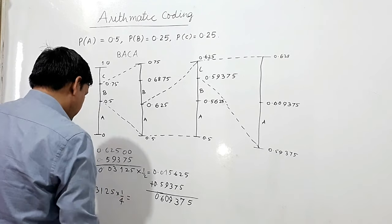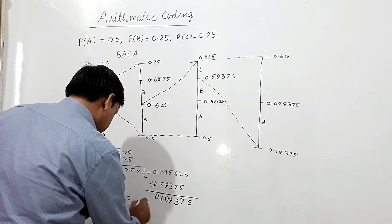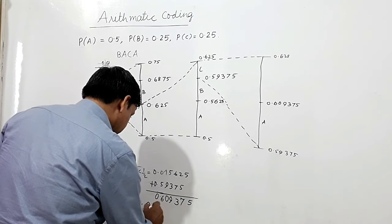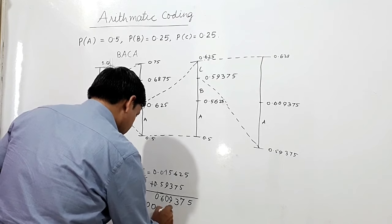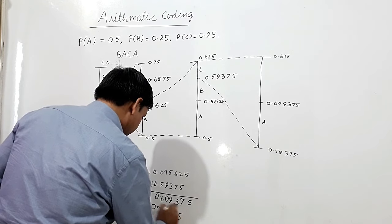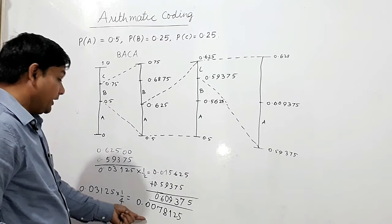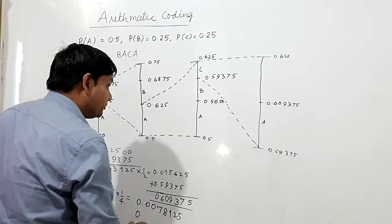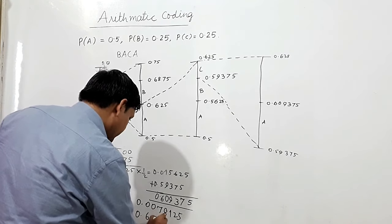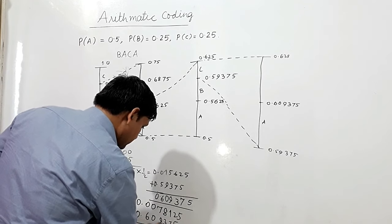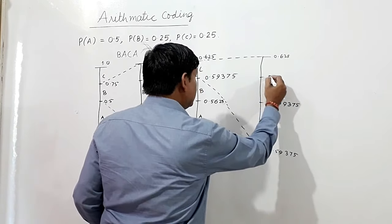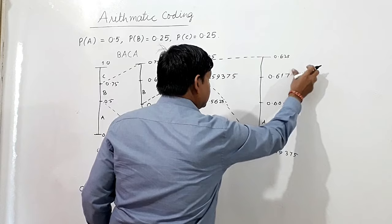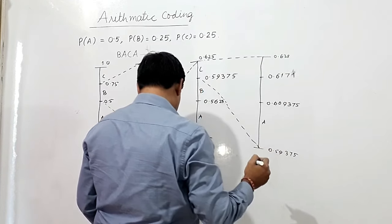For B's sub-interval, I multiply 0.03125 by one quarter, giving approximately 0.0078125. Adding this to 0.609375 gives B's upper limit of approximately 0.6171875.